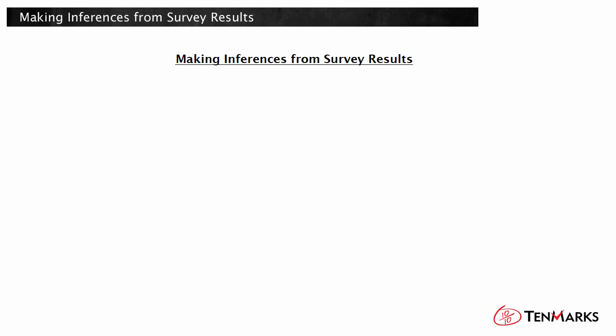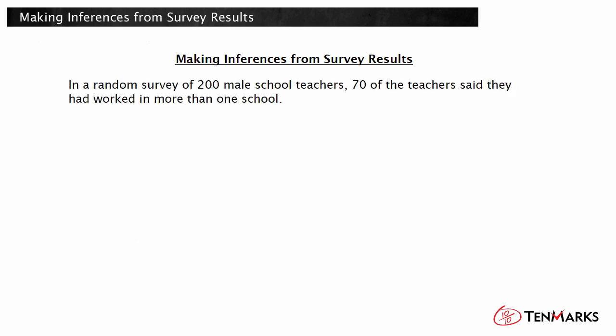In this video, you will learn how to make inferences from survey results. A set of survey results contains two pieces of information. Take a look at the survey result on the screen, for instance. In a random survey of 200 male school teachers, 70 of the teachers said they had worked in more than one school. You are told about the size and makeup of the sample of the population surveyed, and then you are told about their responses.